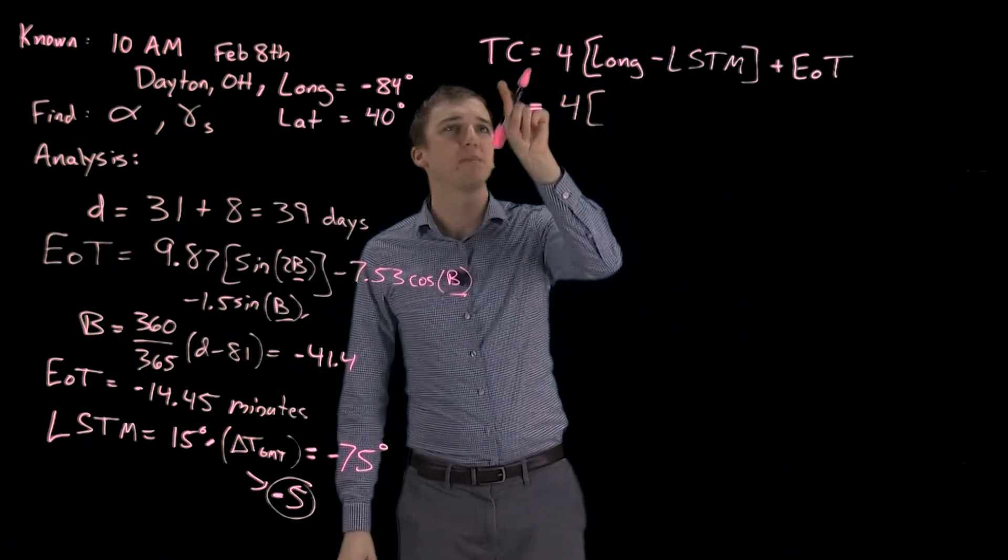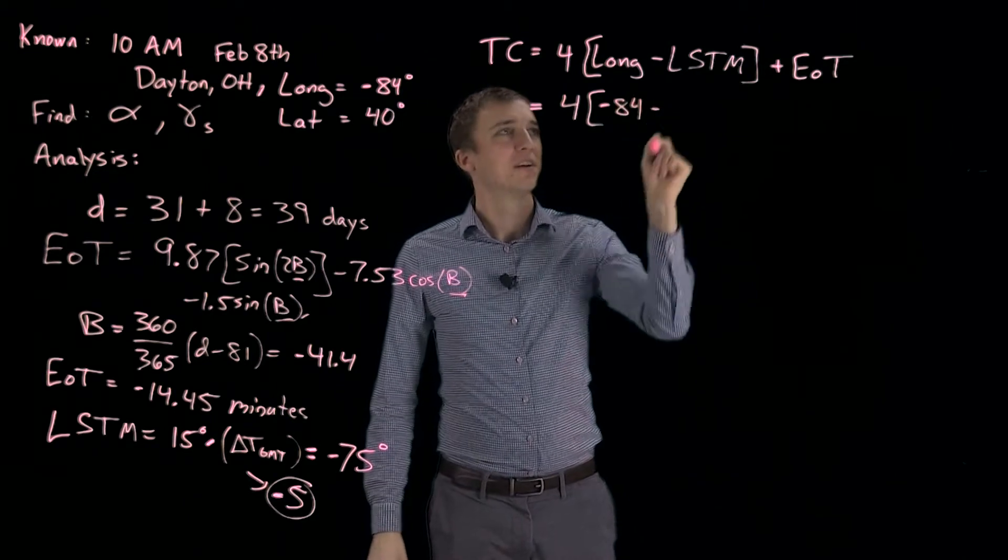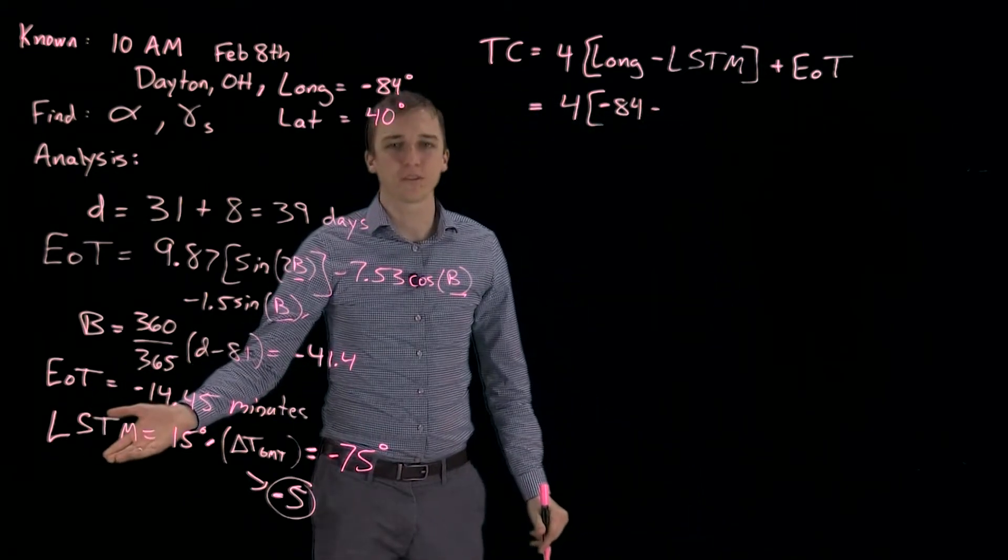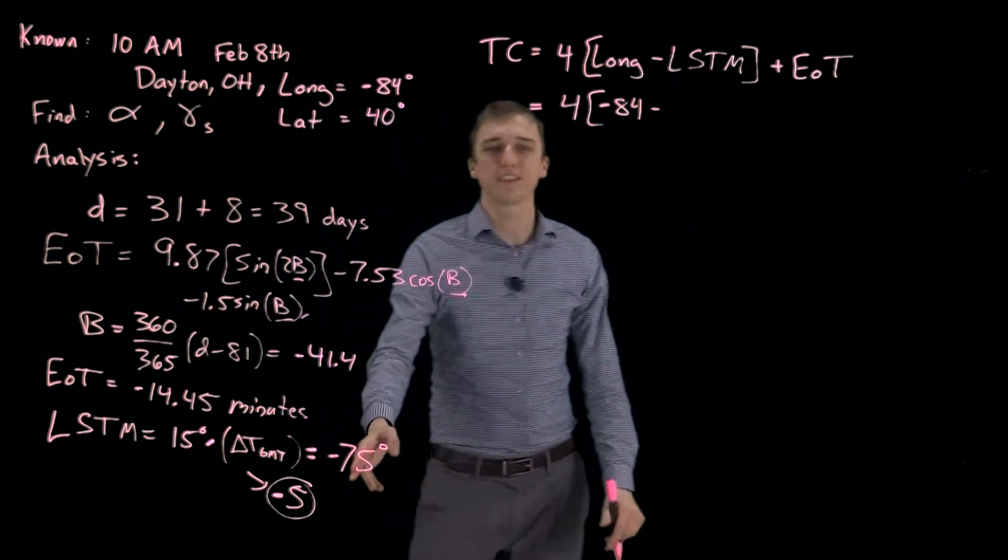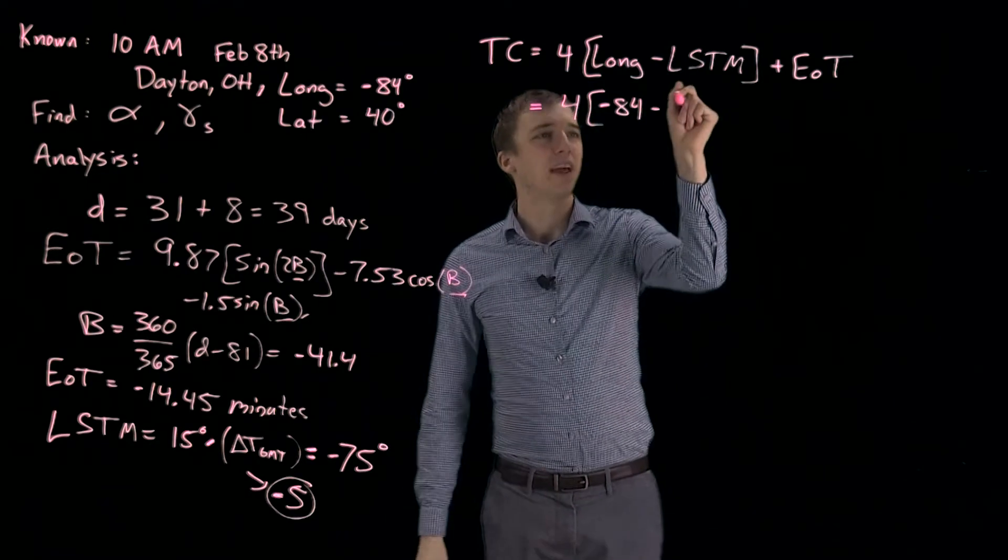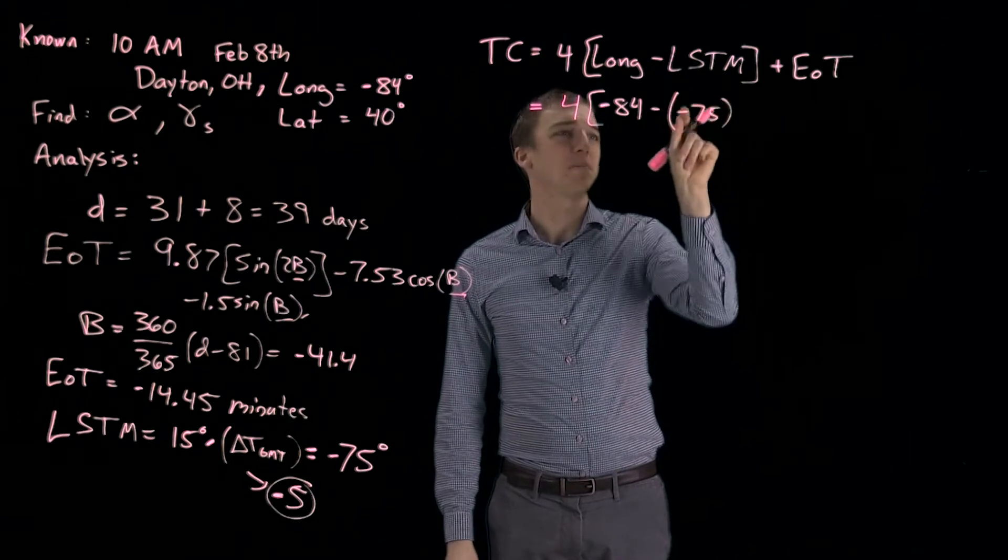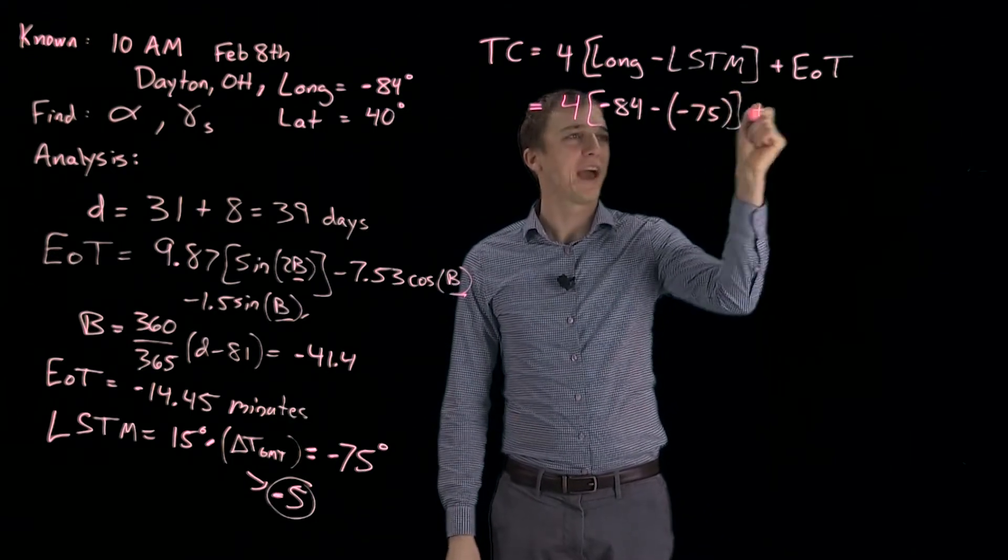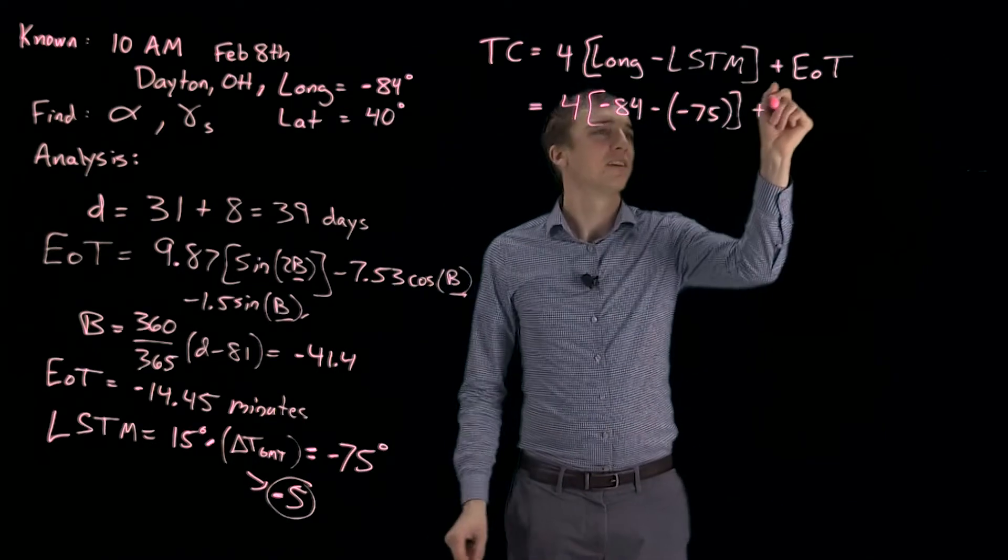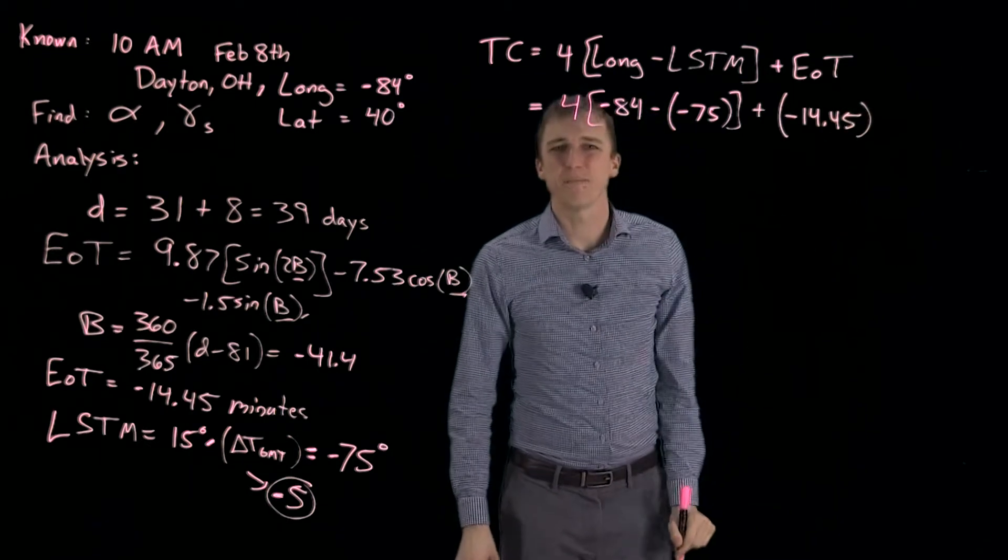Let's go back to our time correction factor. We plug in our longitude, which is minus 84. Subtract that from our meridian, where we reference our local time to. So at a longitude of 75 in the Western Hemisphere, that's where our time is referenced to. And that is a minus 75. Notice how there was already a minus, so we have 2. And we add that to our equation of time, which is minus 14.45, and that is in minutes.